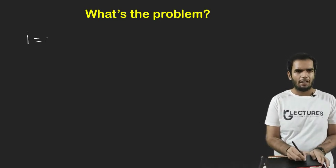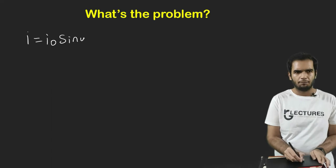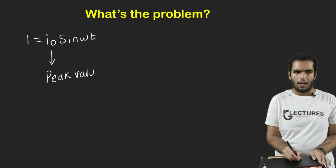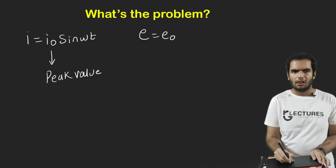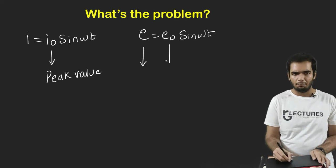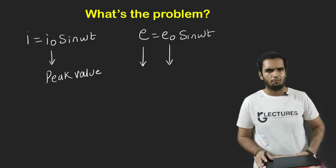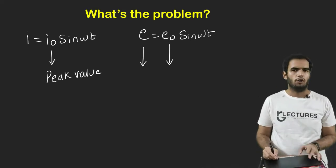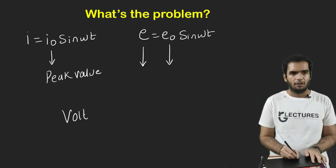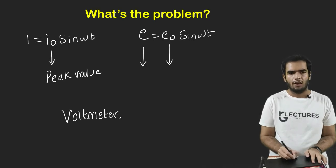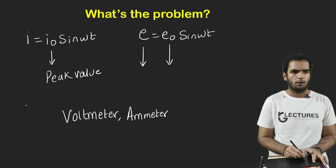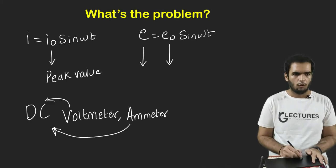So what is the problem? First of all, why do we need RMS value? We already have equation I equals I0 sin omega t, where I0 is peak value. We have the equation E equals E0 sin omega t, where E is the value varying with time and E0 is my peak value. Why do we need RMS value?